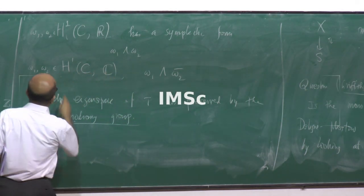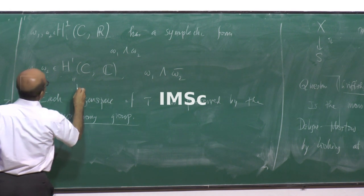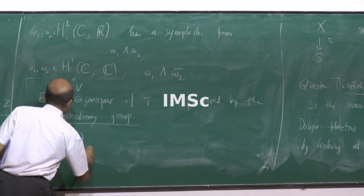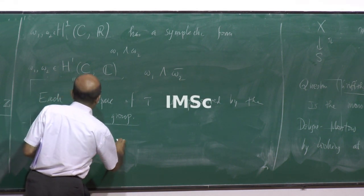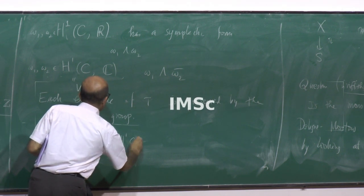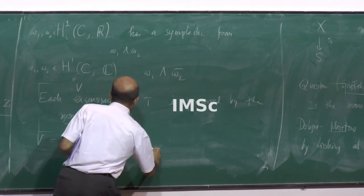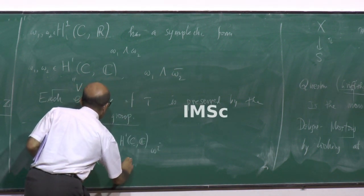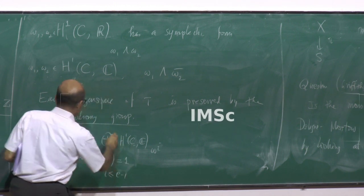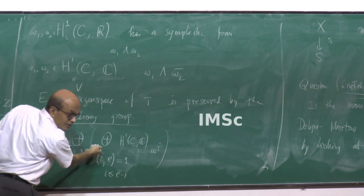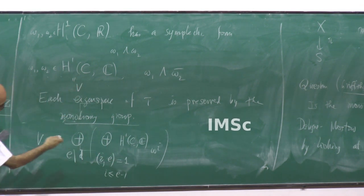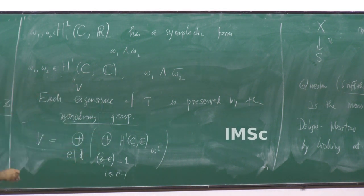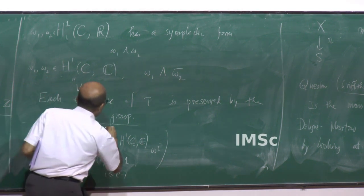So, I can write this like this: this is the vector space V. V is the direct sum where omega to the i, where i and e are co-prime and i less than or equal to e minus 1. I sort of take this part together — all the primitive e-th roots of unity — so that space is actually defined over Q, because I have put all the conjugates together. So these spaces are defined over Q.